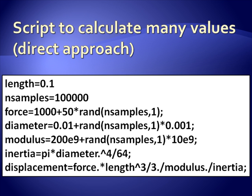So when I multiply by 50 and add 1,000, I get a vector of uniformly distributed forces. I get all 100,000 all in one command. I don't need to do a loop. I can do the same with the diameter and the modulus.